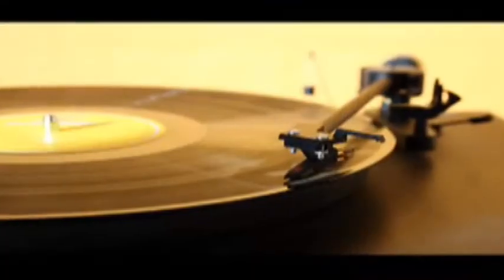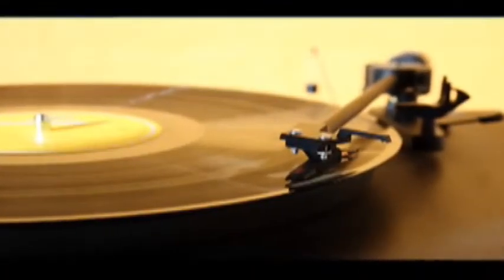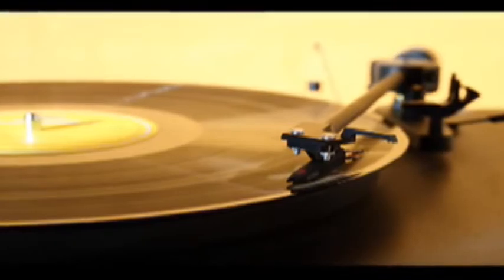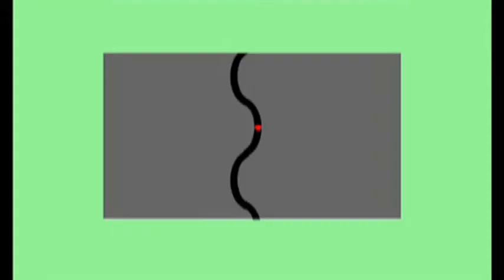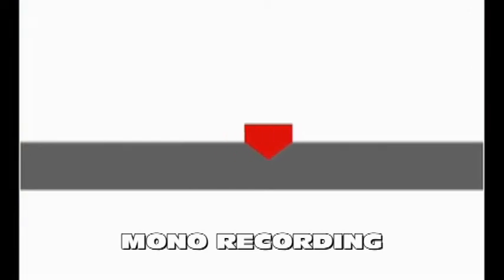Have you ever wondered how old turntables worked? They had their own degree of complexity and used interesting principles of operation. First of all, the way the music was recorded was through a wavy groove which waved the needle at the rhythm of the sound vibrations.